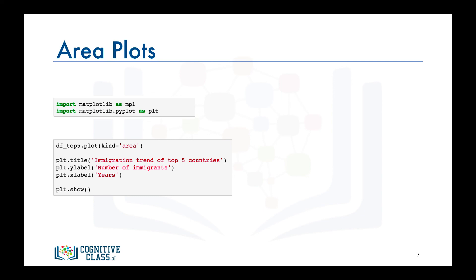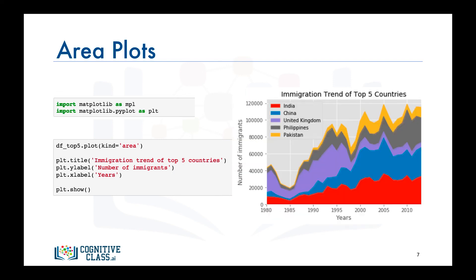Note that here we're generating the area plot using the inline backend. And there you have it: an area plot that depicts the immigration trend of the five countries with the highest immigration to Canada from 1980 to 2013. In the lab session, we explore area plots in more detail, so make sure to complete this module's lab session. And with this, we conclude our video on area plots.